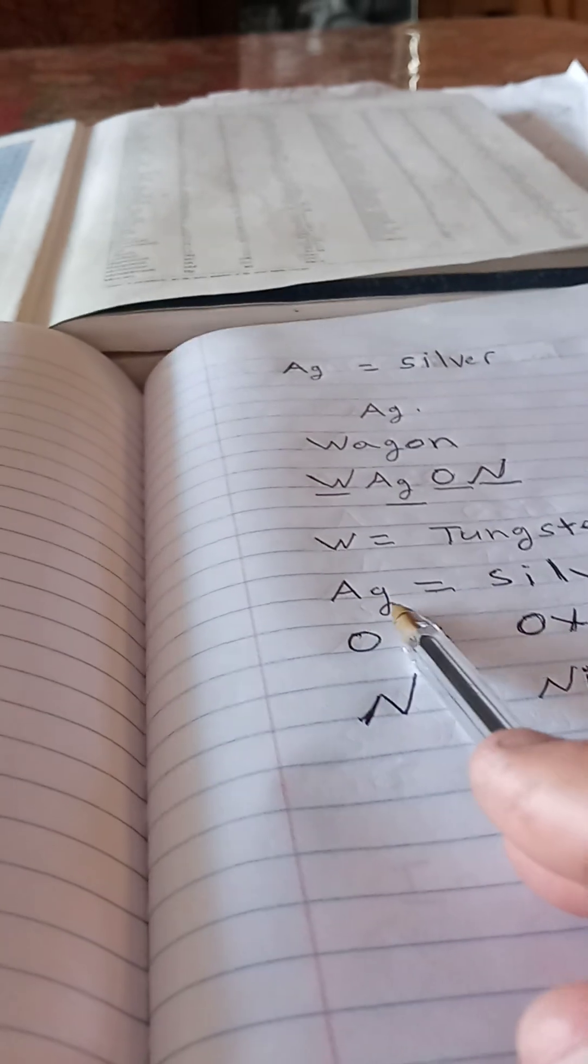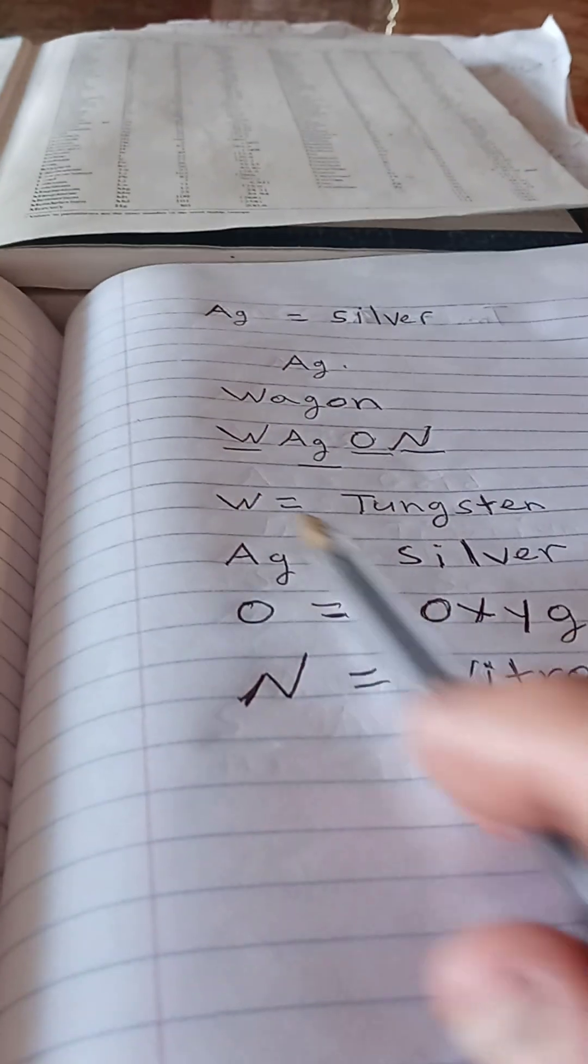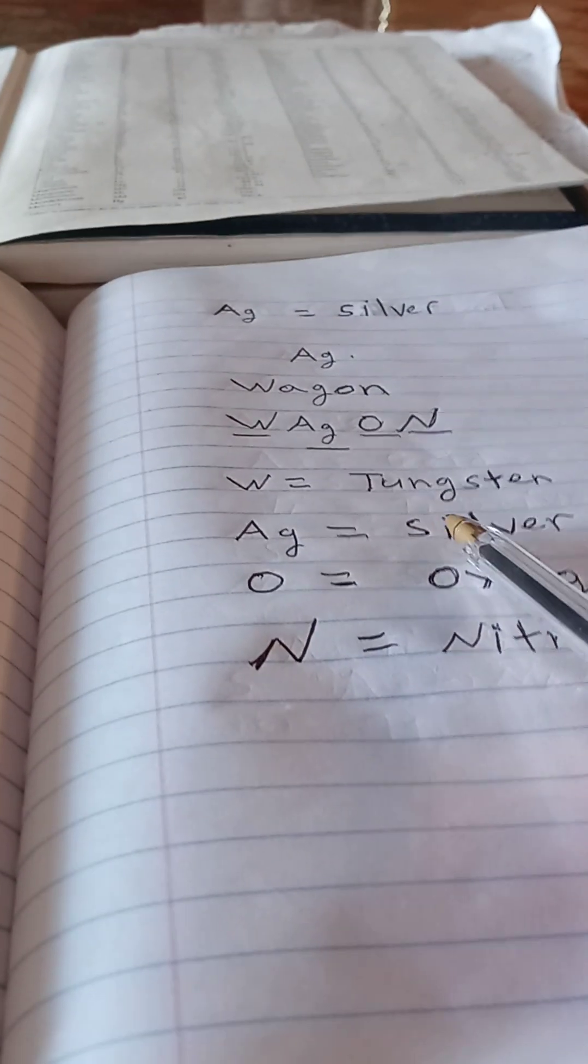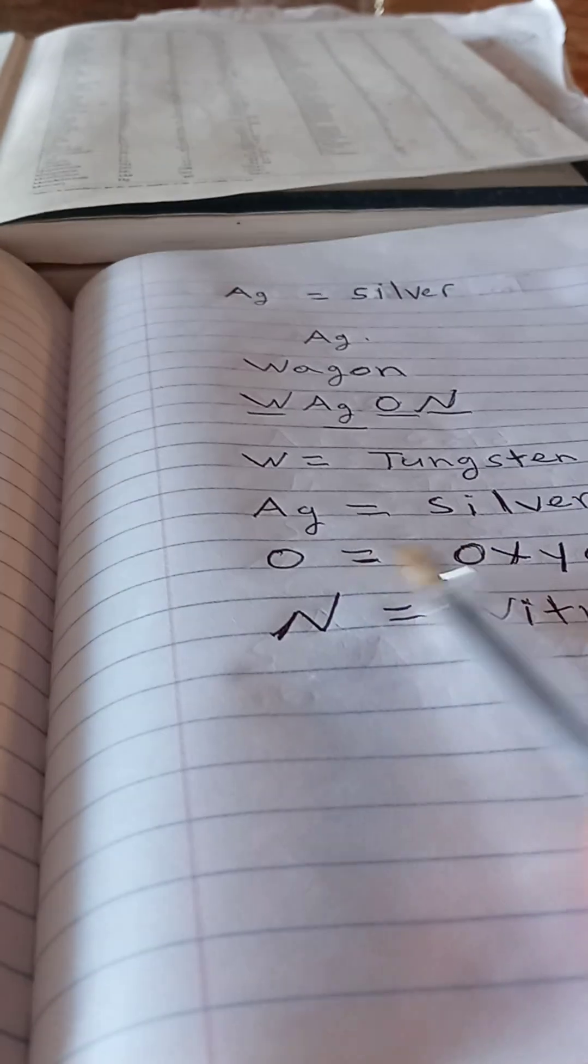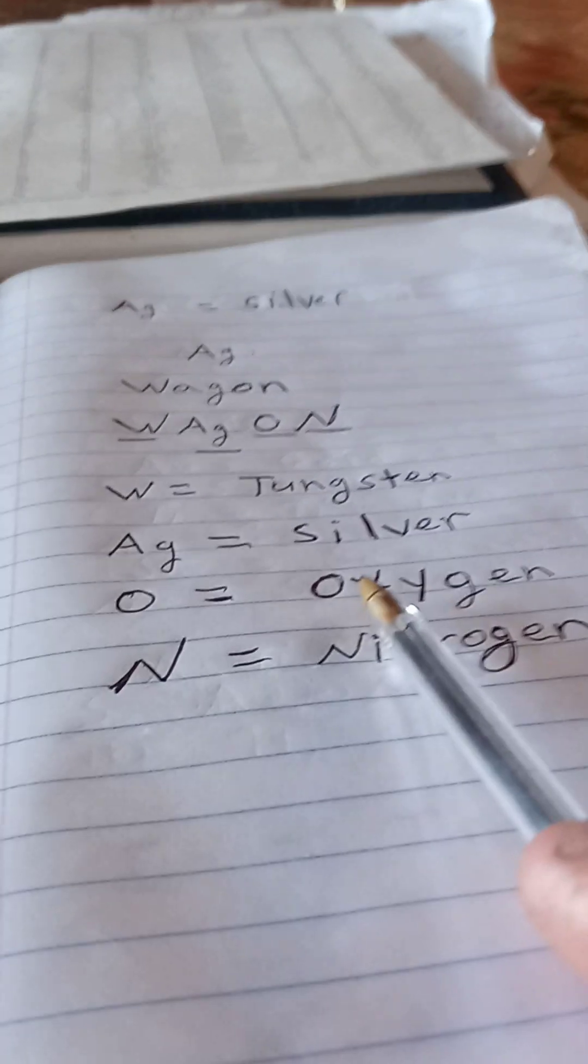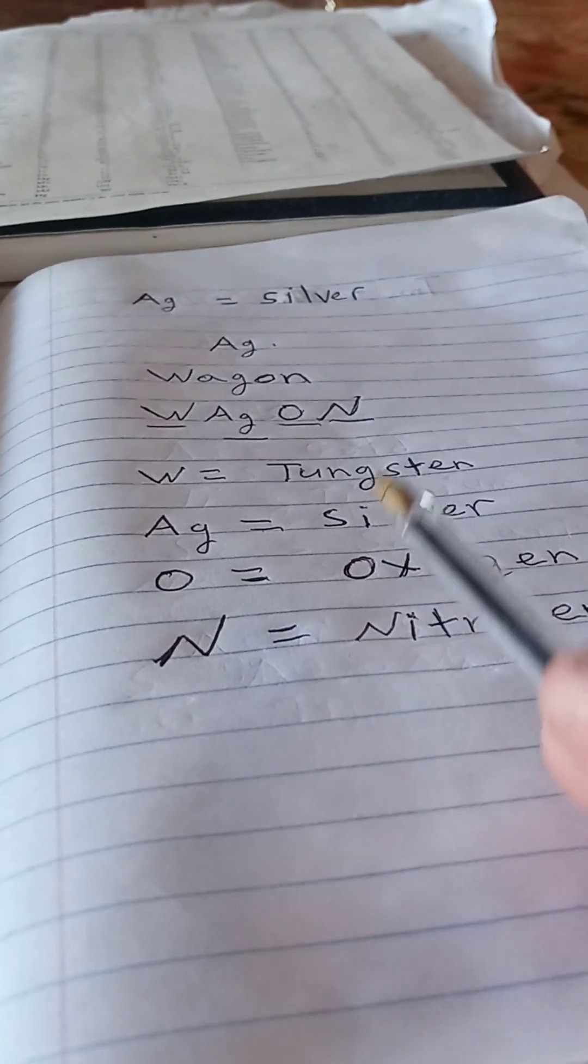And there you go. W is for tungsten, T-U-N-G-S-T-E-N. Capital A and a small g is for silver, S-I-L-V-E-R. Capital O is for oxygen, O-X-Y-G-E-N.